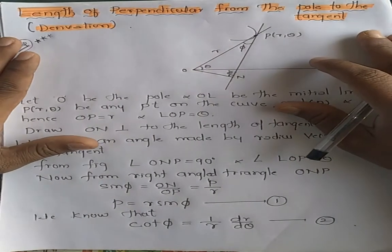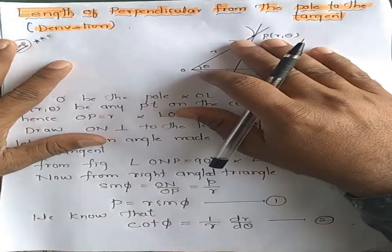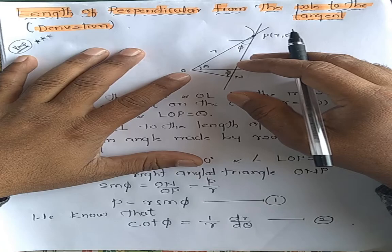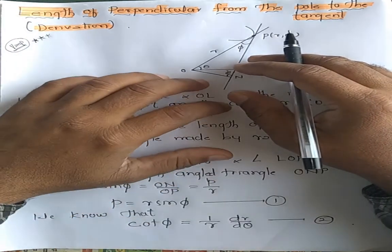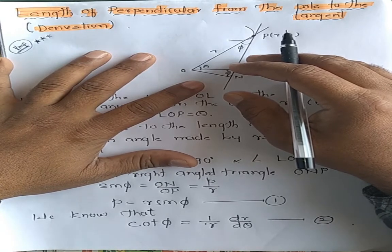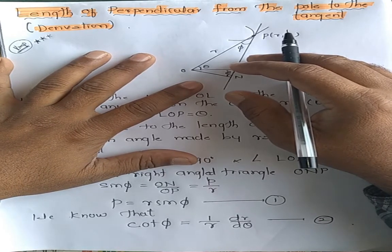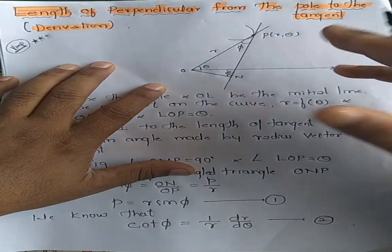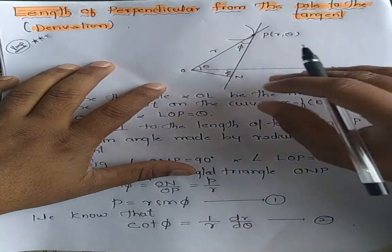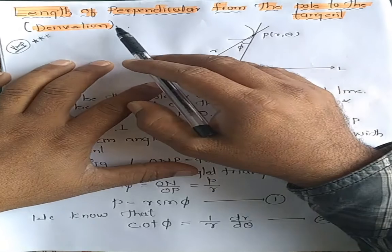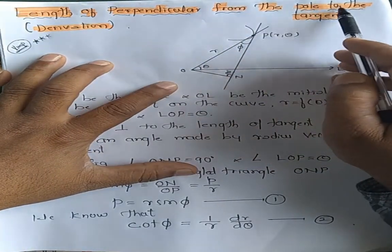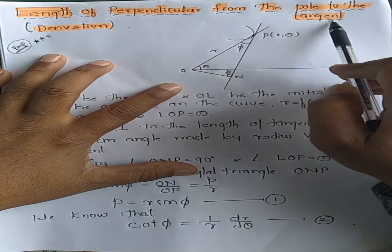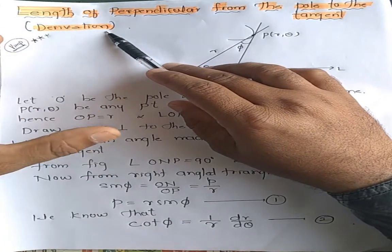Welcome dear students. In the last video lecture we discussed the very important derivation: the angle between radius vector and tangent, which was very important for your exam. Now we'll discuss another derivation. This one has been asked two to three times in examinations. The derivation is called 'length of the perpendicular from the pole to the tangent.'